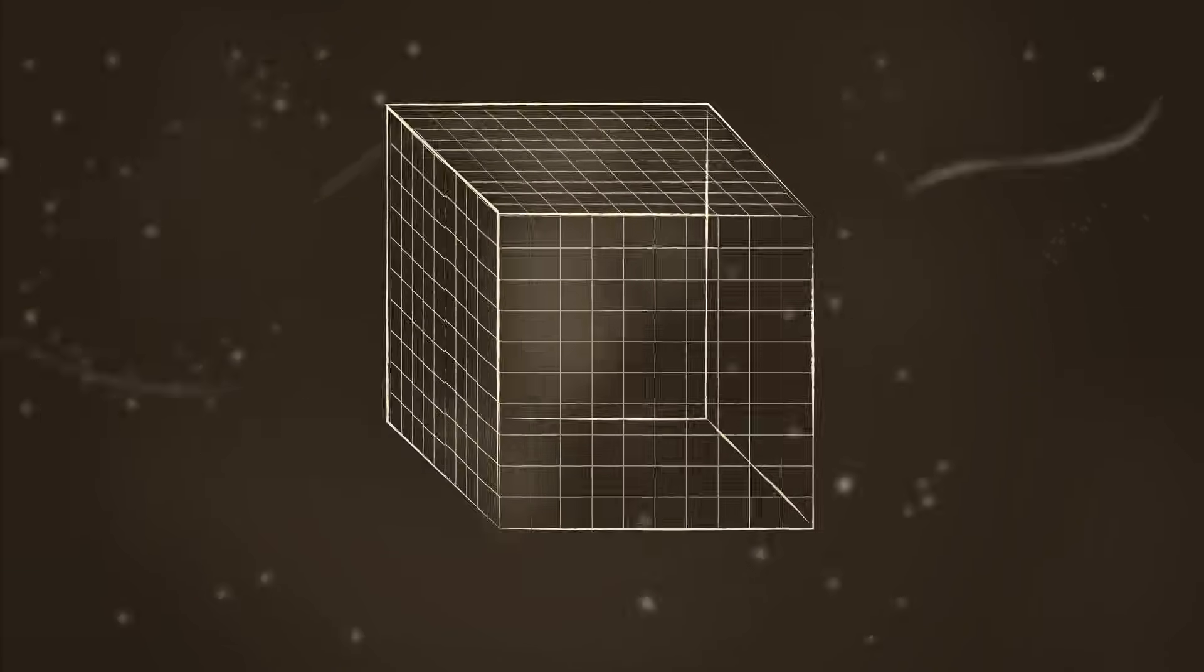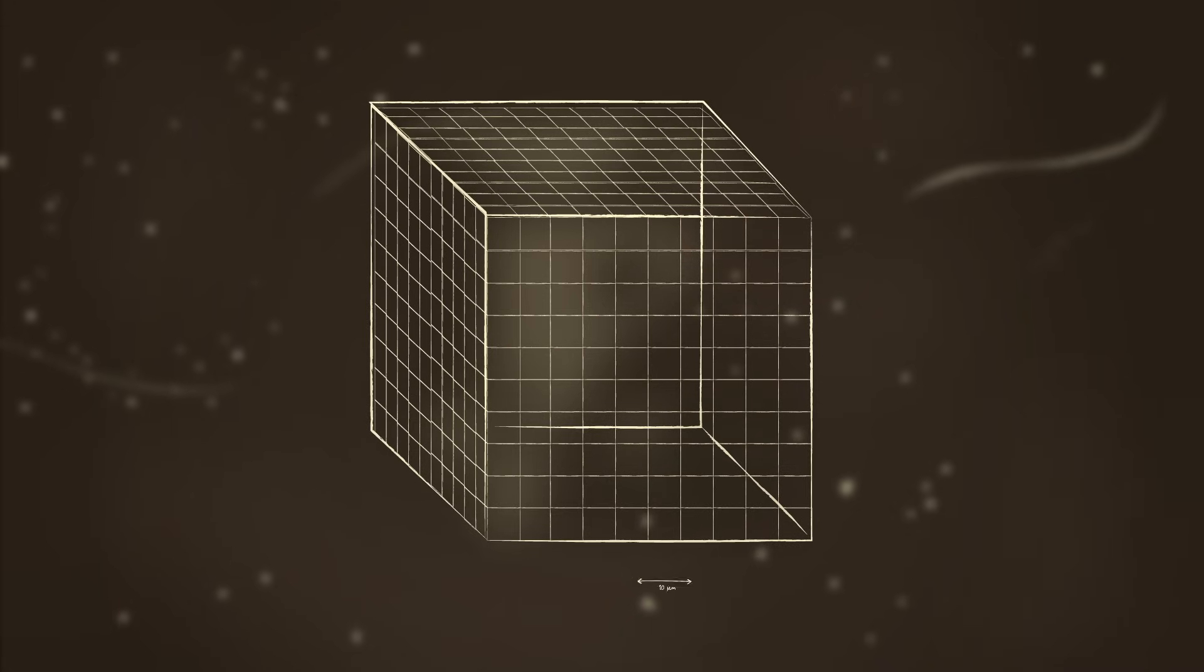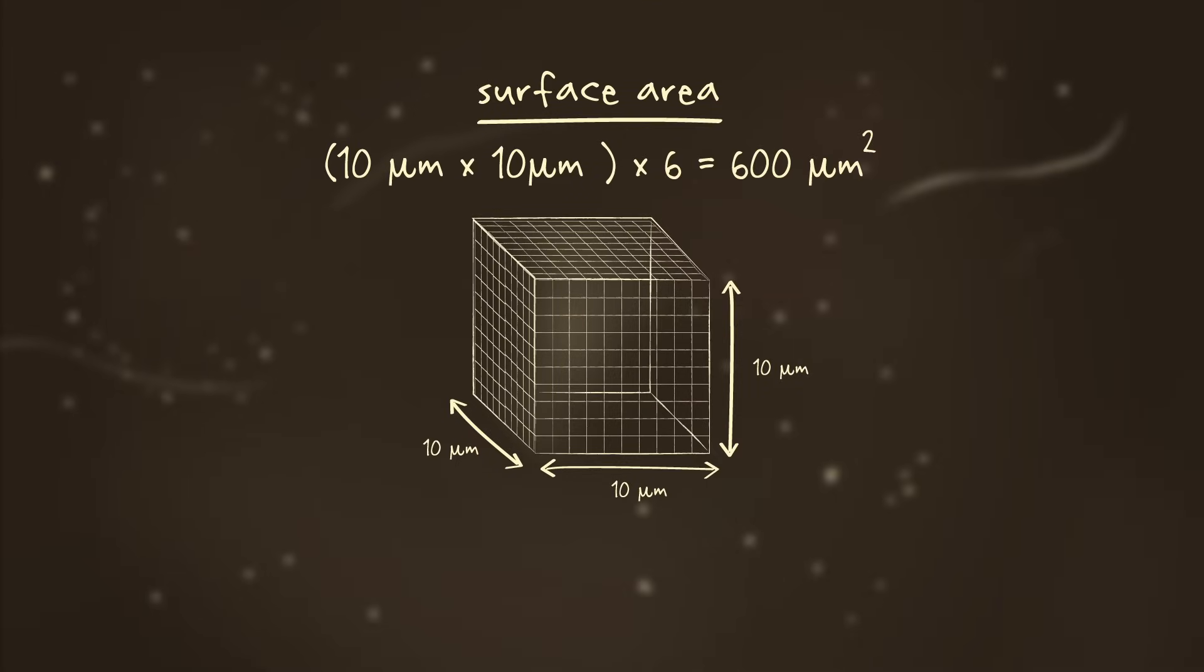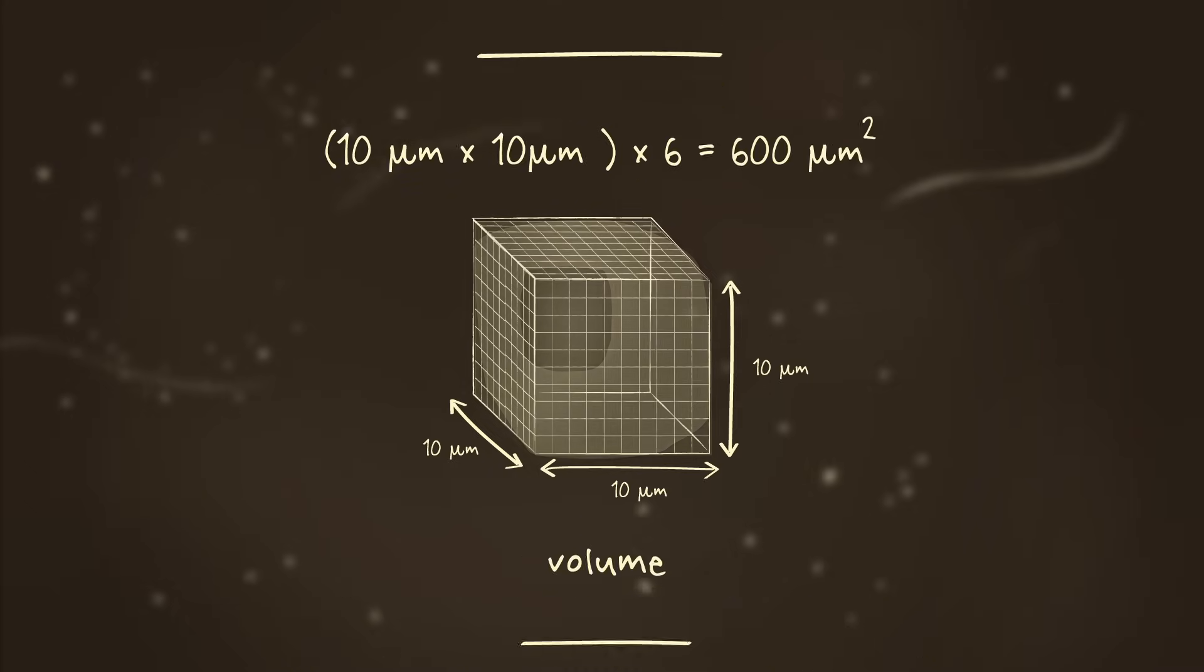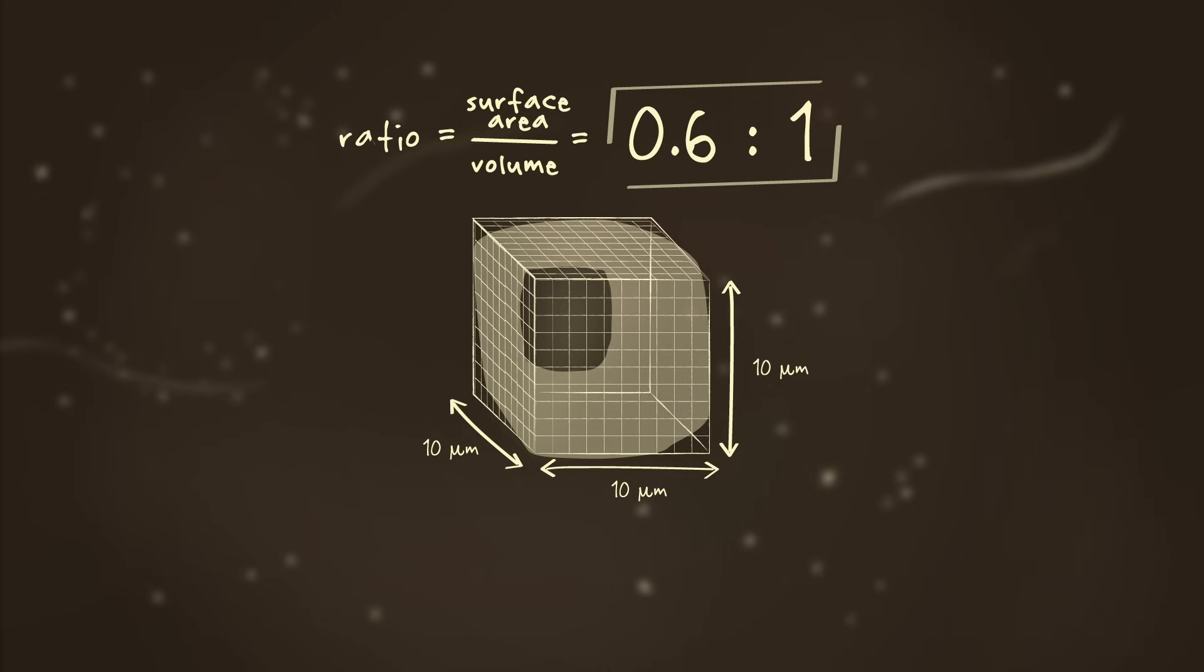But things change dramatically if we make the cube ten times bigger, measuring ten micrometers on each side. This cell would have a surface area of 600 square micrometers, and a volume of 1,000 cubic micrometers, a ratio of only 0.6 to one. That's less than one unit of surface area to service each unit of volume.